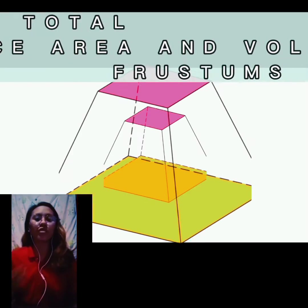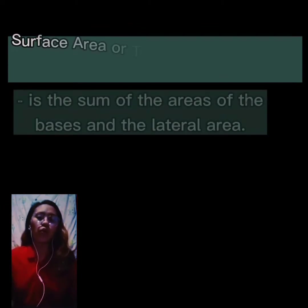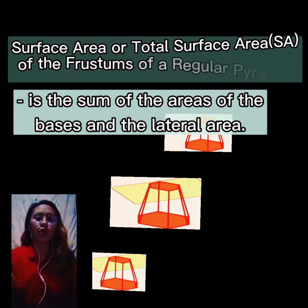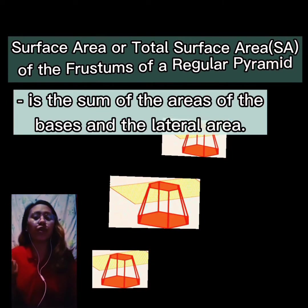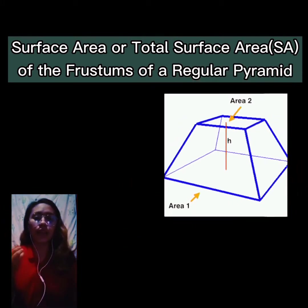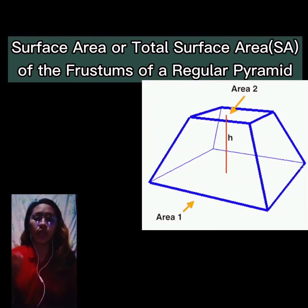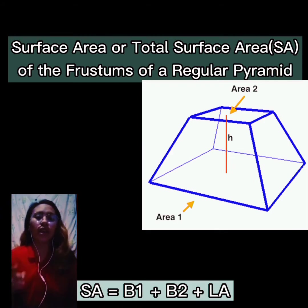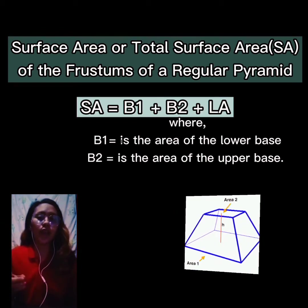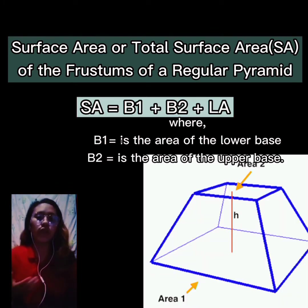We will now proceed with how to calculate the total surface area and volume. The total surface area of frustums of a regular pyramid is the sum of the areas of the bases and the lateral area. The formula is: Surface Area = B1 + B2 + LA, where B1 is the area of the lower base, B2 is the area of the upper base, and LA is the lateral area we solved earlier.